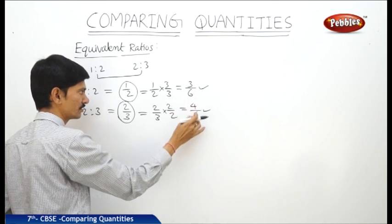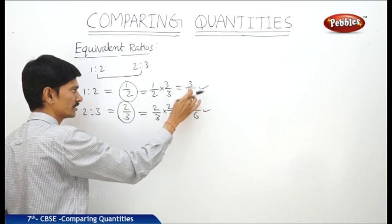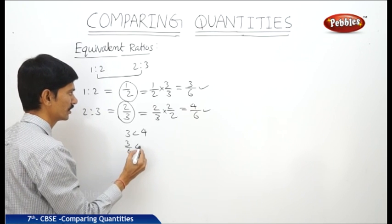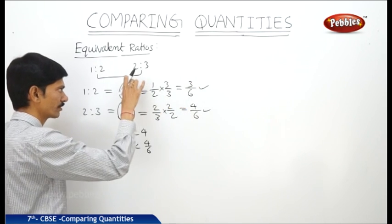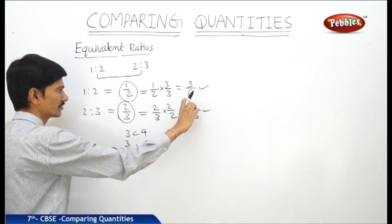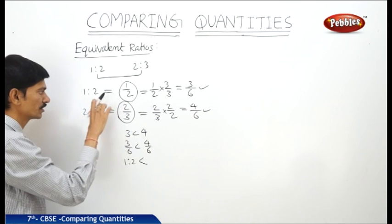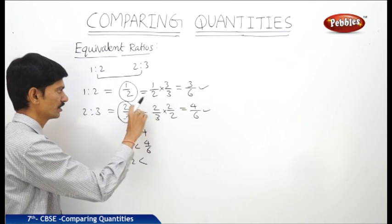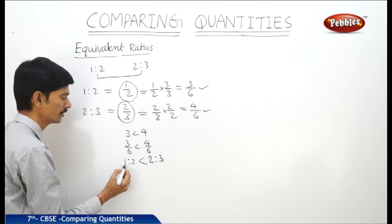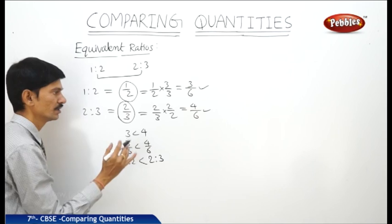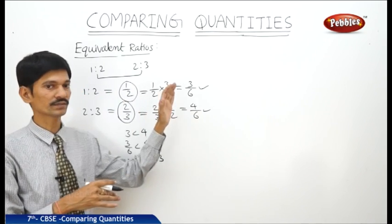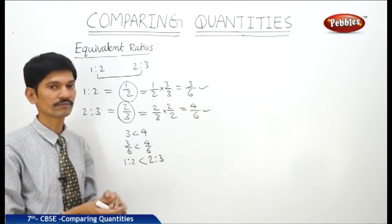When we compare these two fractions, the denominators are equal. Comparing the numerators, 3 is less than 4, so 3 by 6 is less than 4 by 6. Now 3 by 6 is the same as 1 by 2, which is the same as 1 is to 2. And 4 by 6 is the same as 2 by 3, which is the same as 2 is to 3. Therefore, the ratio 1 is to 2 is less than 2 is to 3. To compare two ratios, write them in fraction form, convert to like fractions, then compare.